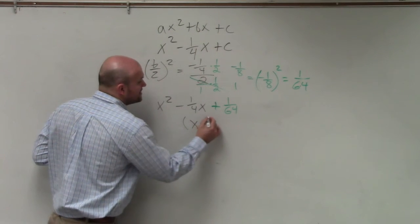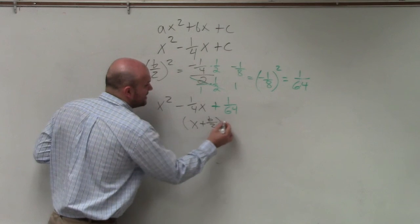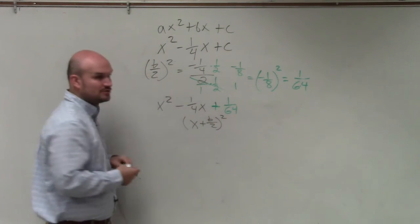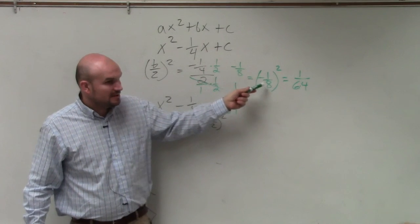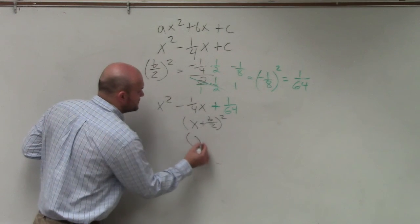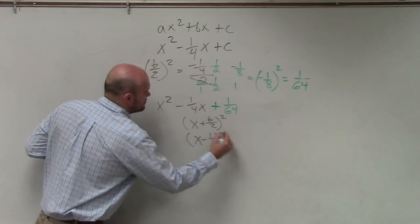...all I mention is the factored form is always x plus b divided by 2 squared. So what was my b divided by 2? Negative one eighth. So the factor form is x minus one eighth squared.